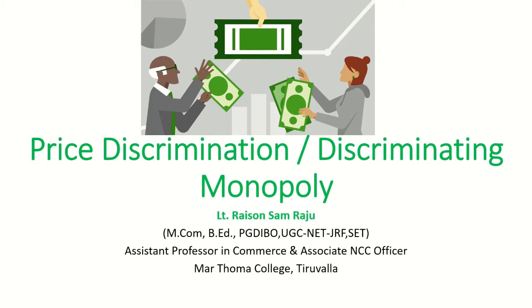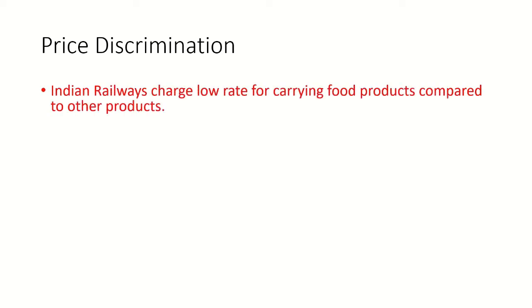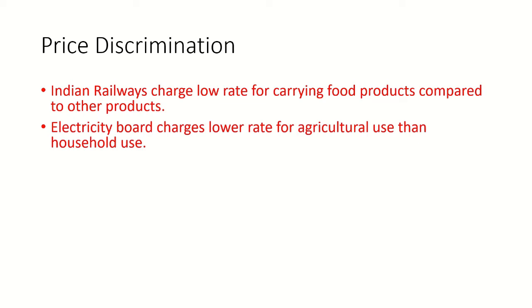Price discrimination is the other side of monopoly. For example, Indian railways charges a lower rate for carrying food products compared to other products. Electricity is charged at a lower rate for agriculture use than for household use. Also, there are two different prices for different seats in a theater, such as first class versus other classes.